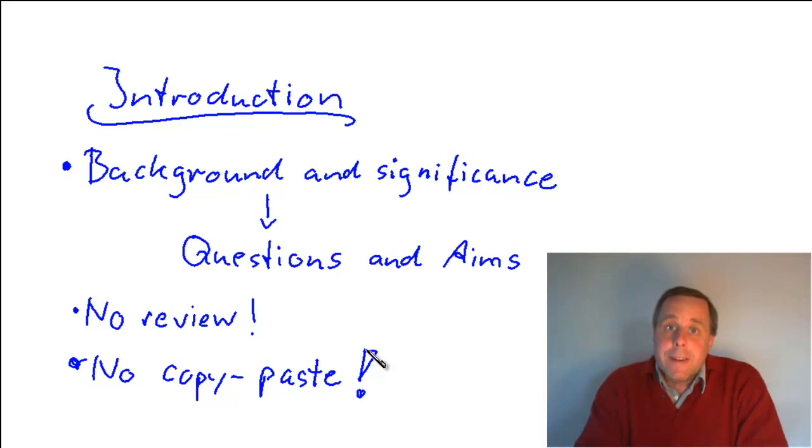But the other reason is also that you're not supposed to write another review on your topic. You're just supposed to summarize the most important facts that will lead to the questions and aims of your introduction section. And that's why you emphasize different things than a general review would emphasize. You emphasize just that what is really relevant to the experiments and to the study that you have been performing. And that's the other major reason why you never ever do this copy paste thing.